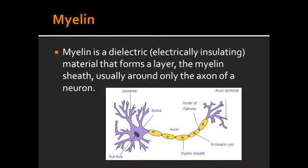What is myelin? Myelin is a dielectric, electrically insulating material that forms a layer called the myelin sheath, and this is usually around the axon of a neuron.